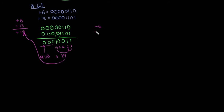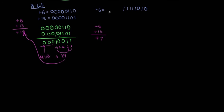Now let us perform minus 6 plus 13, which gives plus 7. 13 minus 6 is 7 — we have to get 7. We already know minus 6 in two's complement. Scan from the right: write the first 0, first 1, then flip the remaining bits, giving 1,1,1,1,1,0,1,0. This is minus 6.